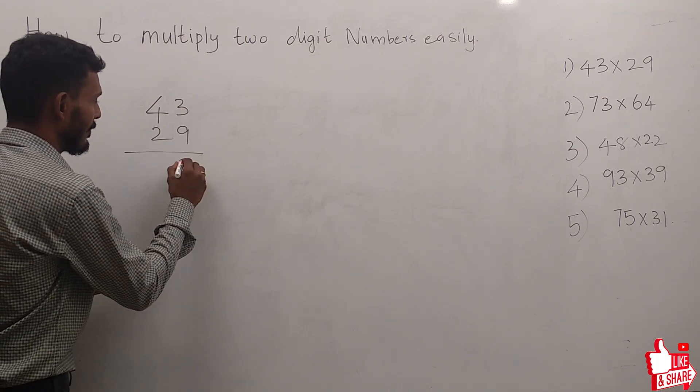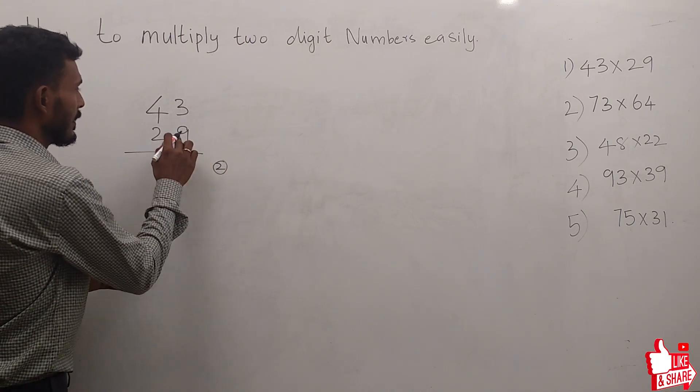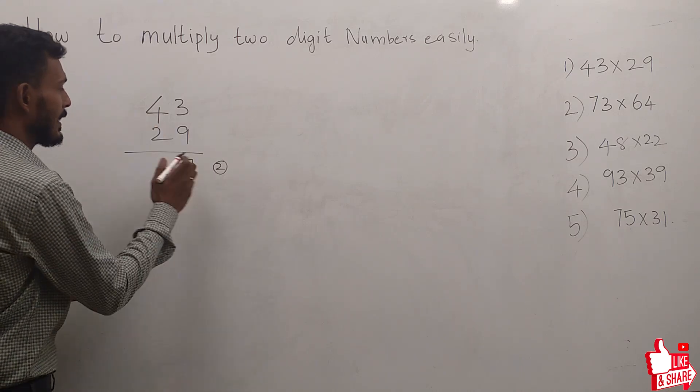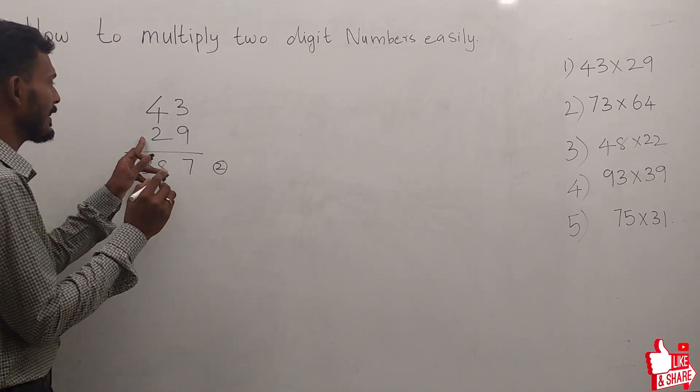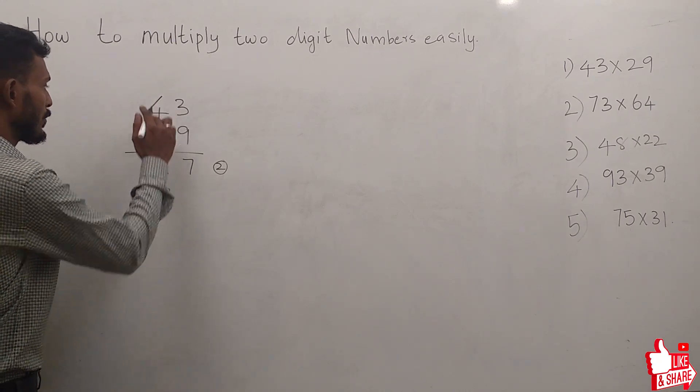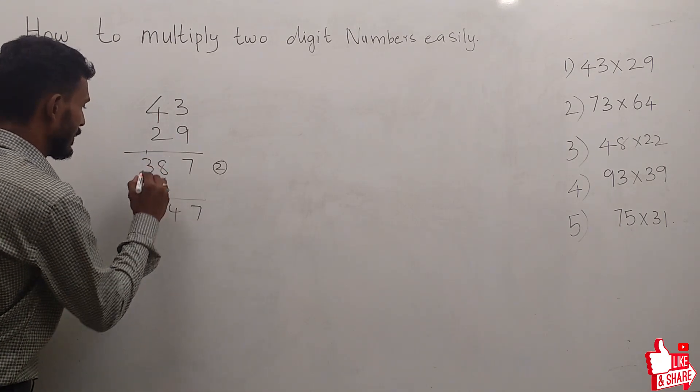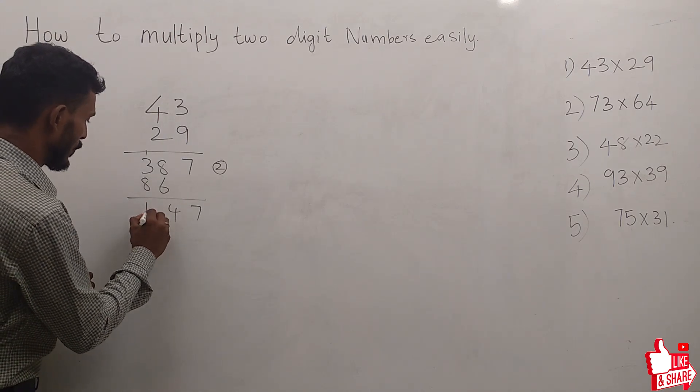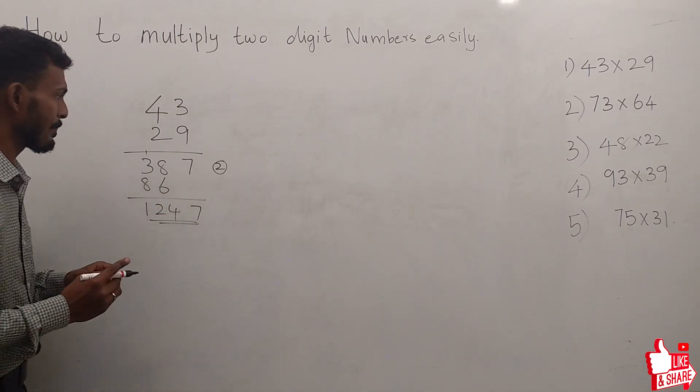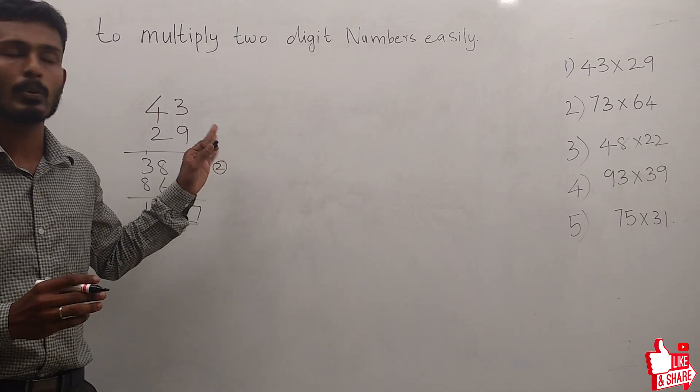9 × 3 = 27, carry forward 2. 9 × 4 = 36, plus 2 is 38. Then 2 × 3 = 6, 2 × 4 = 8. So we get 7, 4, then 12. 1, 2, 4, 0. This is the traditional way of doing this.